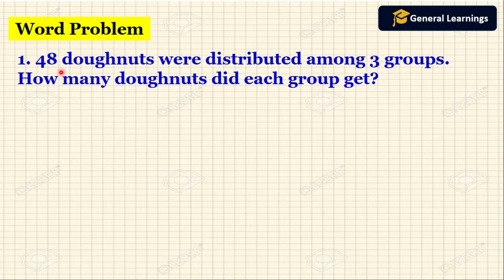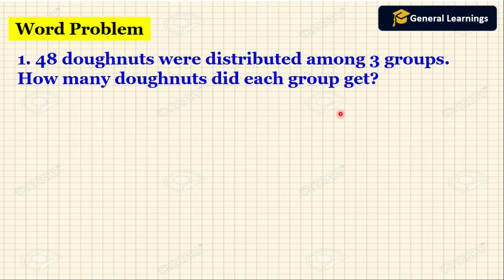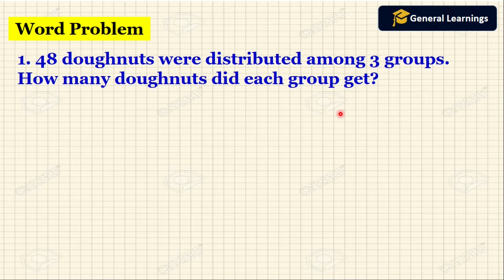Here they have given 48 donuts that are distributed among 3 groups. How many donuts did each group get? Before starting this word problem, we need to know when we are going to divide a number. If something is like distributed, shared, or grouped equally, or if we have the value of many quantities and need to find the value of one quantity, that is when we should divide. Here the hint word is 'distributed', so we are going to divide.